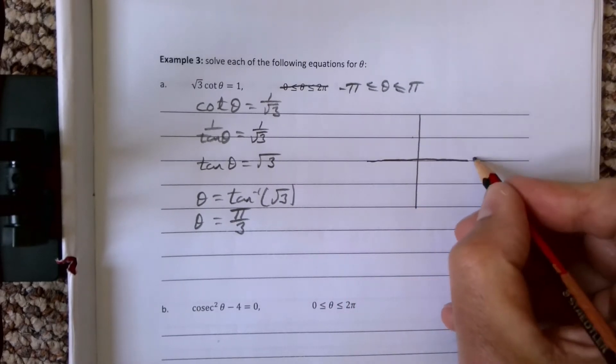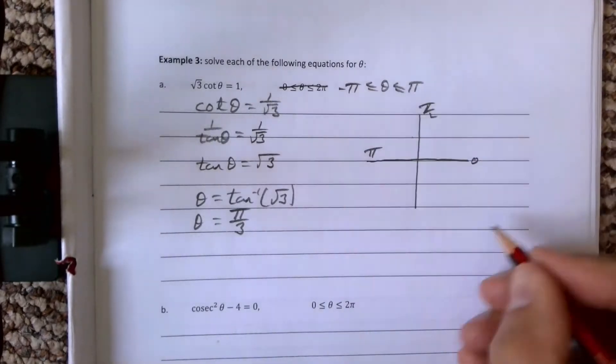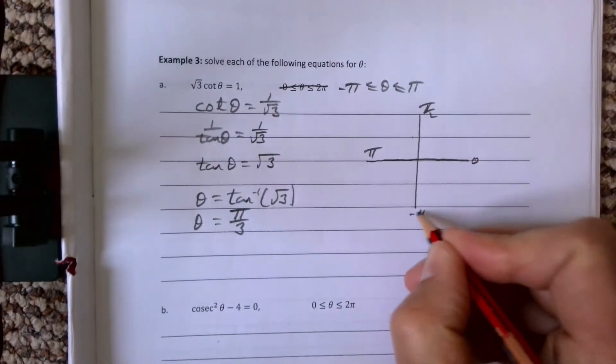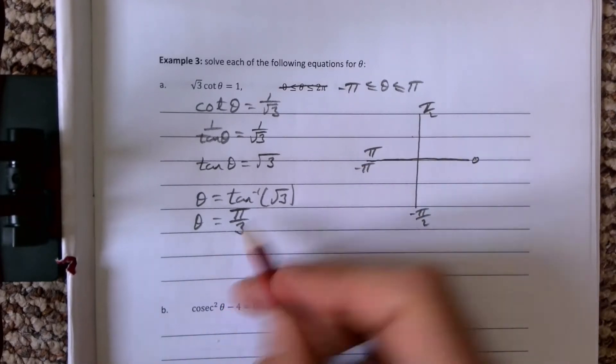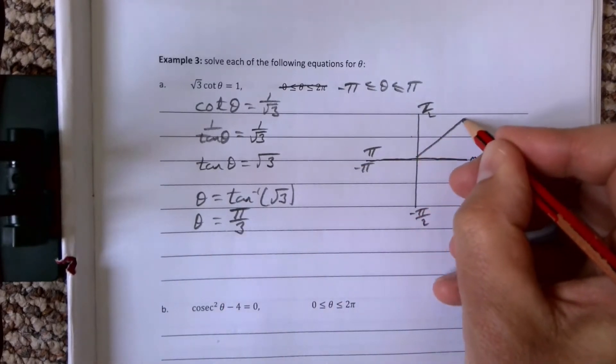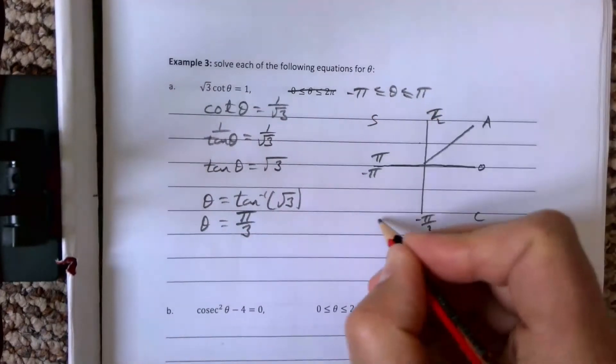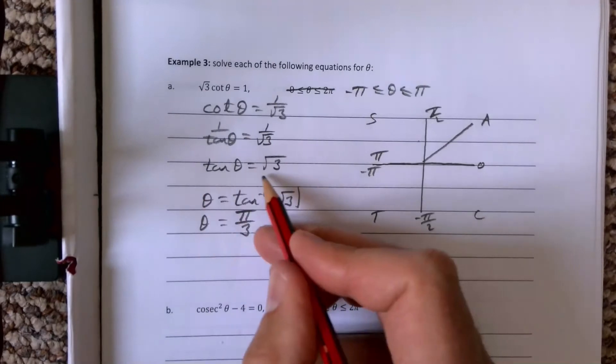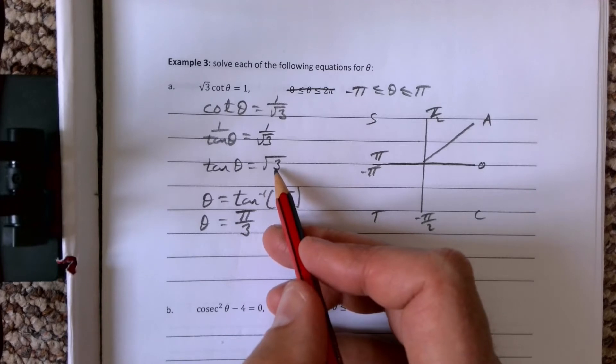If we then draw our CAST diagram, let's draw it up here. We're going 0, π over 2, π, and this way is minus π over 2 and minus π. We have our π over 3 here, which is our basic angle, and we have C, A, S, T.